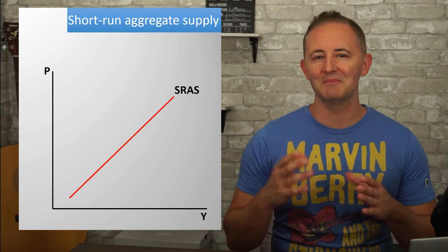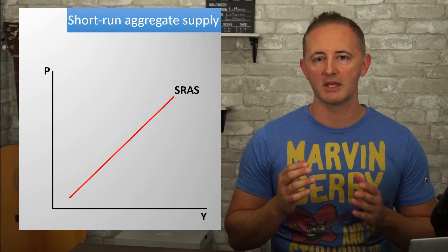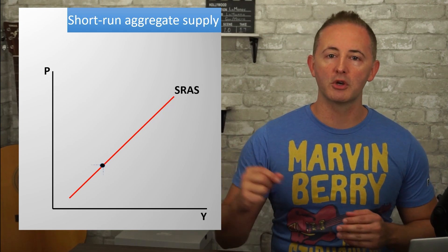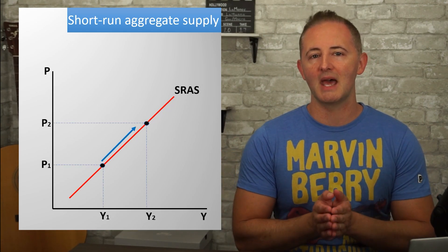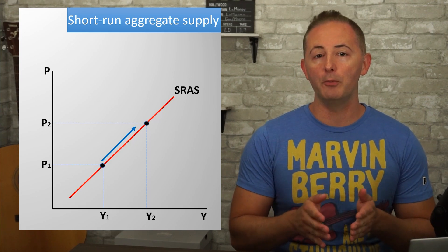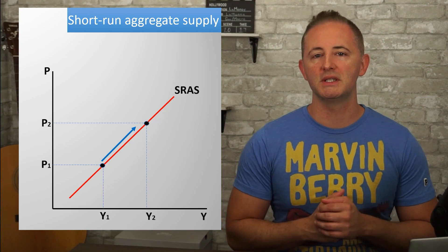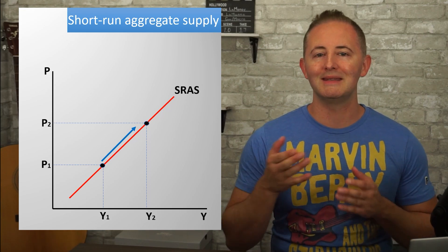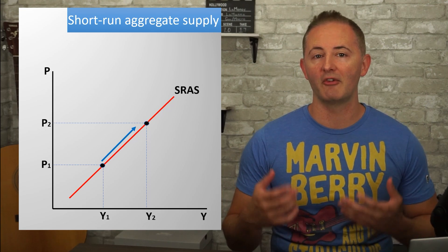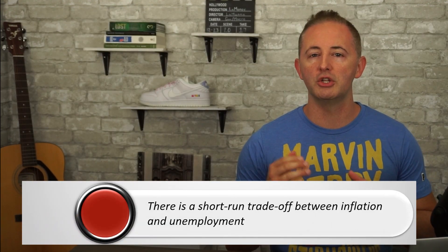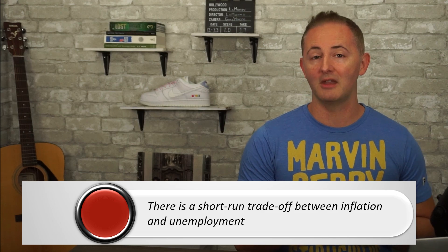This is a macro model, so there's another important thing to point out about our SRAS curve. As we move upwards along the SRAS model, we can see on the x-axis that aggregate output is increasing. And as aggregate output increases, unemployment decreases because more workers are needed to produce the increased level of output. This means that there is a short-run trade-off between inflation, a higher price level, and unemployment.